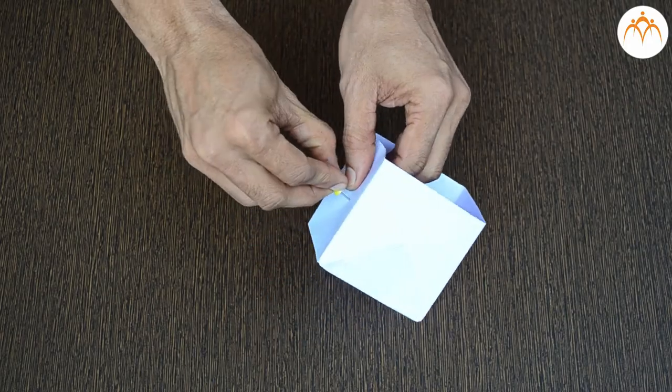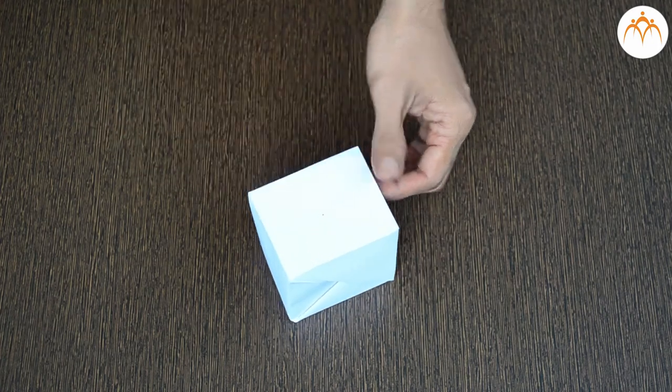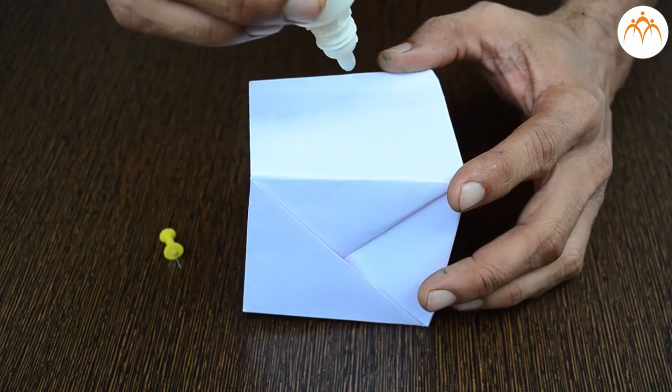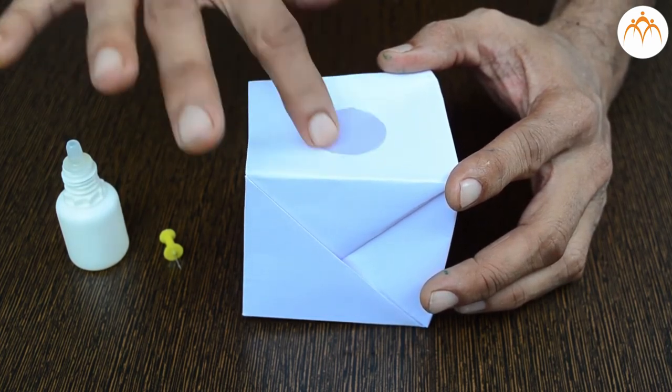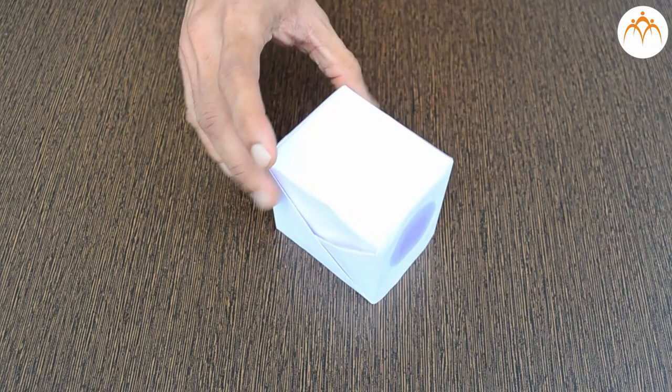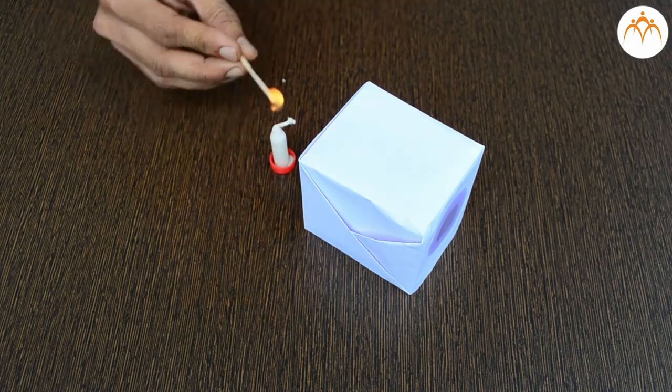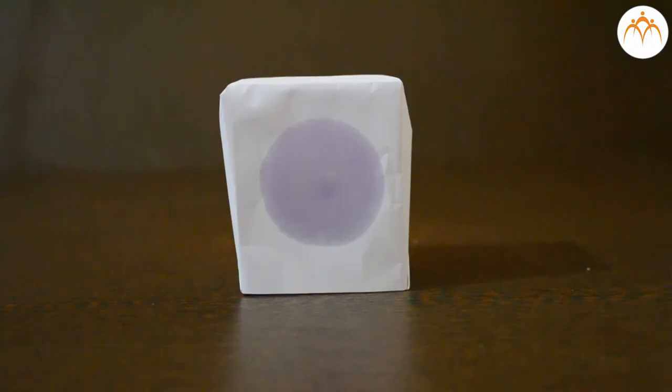Let us make a small hole on one side with the help of a pin. We'll apply some cooking oil on the other side to make the paper translucent. Let us place our pinhole camera in front of the candle.